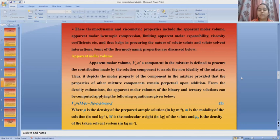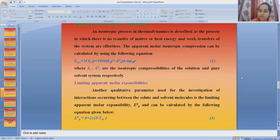It can be calculated by using the formula: V_φ = M/(ρ) - (ρ - ρ₀)/(m·ρ·ρ₀), where ρ is the density of the prepared sample solution, m represents the molality of the solution, M represents the molecular weight of the solute, and ρ₀ is the density of the taken solvent system.